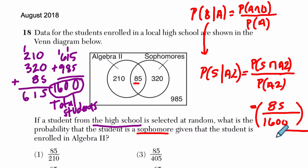What's the probability that they're in algebra 2? So how many students are in algebra 2? So altogether there are, looks like, 210 plus 85 students in algebra 2. That's 295 out of 1,600.